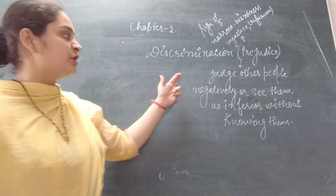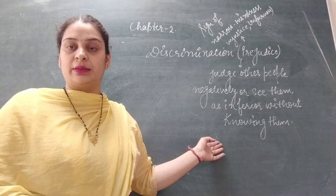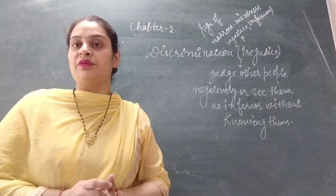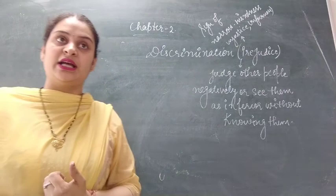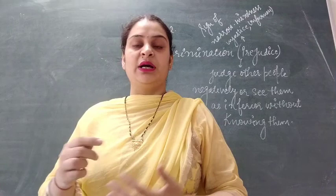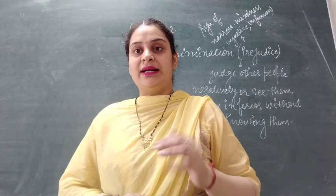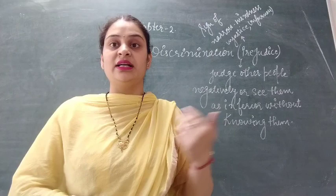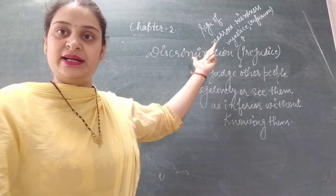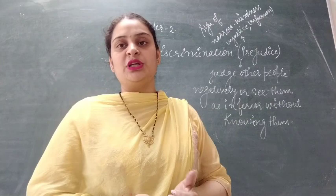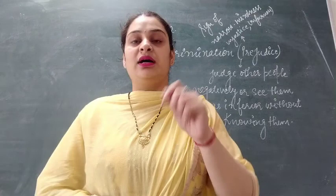Another term we use for discrimination is prejudice. Prejudice means when we judge other people negatively or see them as inferior without knowing them — when we don't have complete information about a particular group of people, we may create a negative opinion about them. This mainly happens in urban areas where a person who comes from a small town finds it very difficult to adjust. Those already living in a modern area start making negative opinions about that person who came from a small town. Prejudice is a sign of narrow-mindedness, unfairness, and injustice.